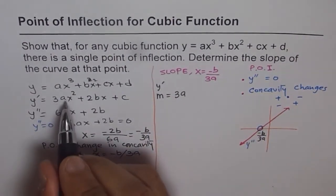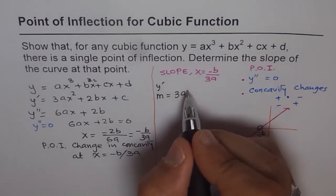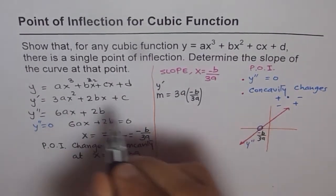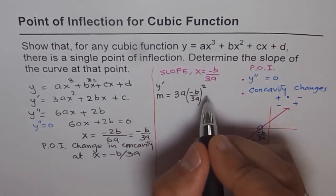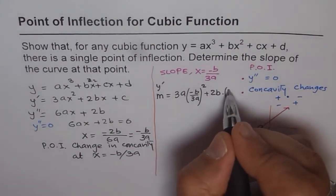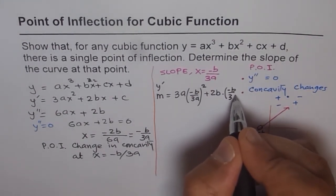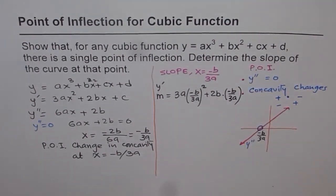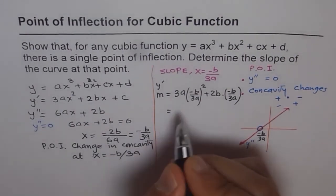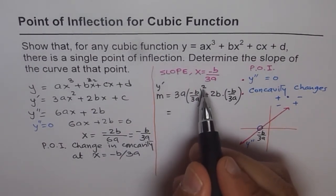M equals 3 times a, and instead of x, we are using minus b over 3a. So we will write minus b over 3a whole square, plus 2b times minus b over 3a. So that becomes the slope of our function at that particular point.